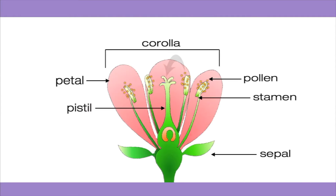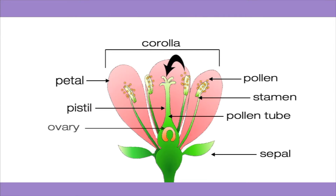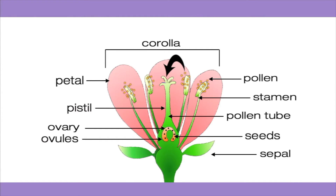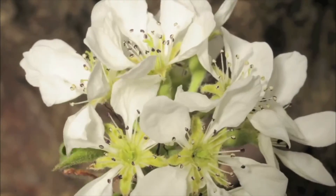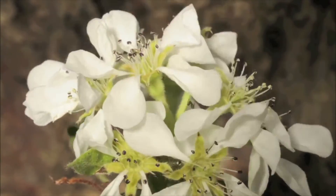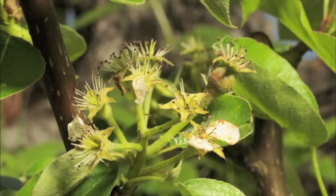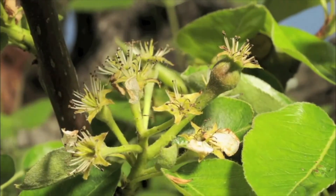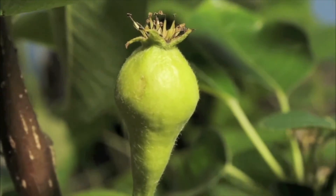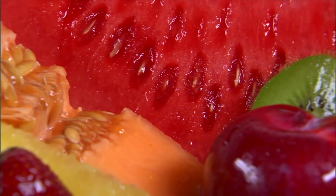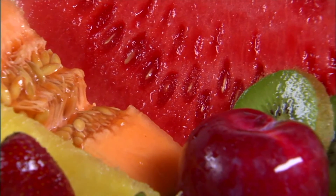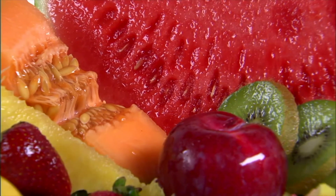Once the pollen grains stick to the pistil, a pollen tube begins to form. The pollen tube extends down to the ovary, the lowermost part of the pistil. In the ovary, we find the ovules. The ovules develop into seeds. After fertilization, the petals of the flower dry out and fall off — they're not needed anymore. And then the ovary transforms into a fruit. Fruit surrounds and protects the seeds. The next time you eat certain fruit or vegetables, you can check out the seeds inside. The seed contains the young plant that allows the plant to reproduce.